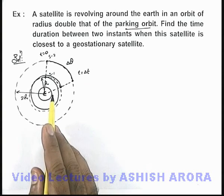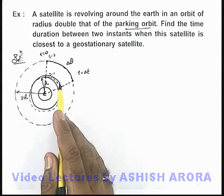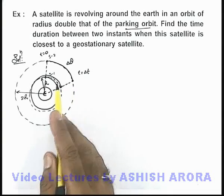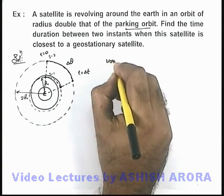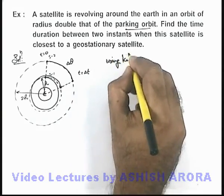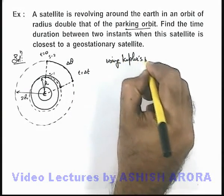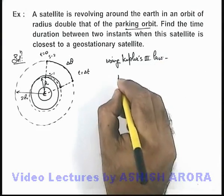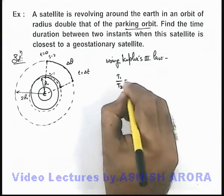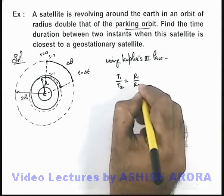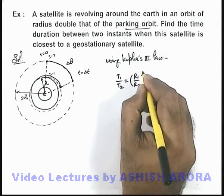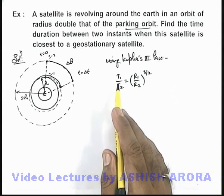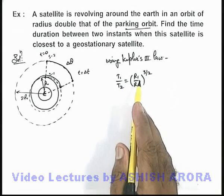Now we find the time period of satellite 2 using Kepler's Third Law. Using Kepler's Third Law, we have T1 / T2 = (R1 / R2)^(3/2), since the square of the time period is directly proportional to the cube of the orbit radius.